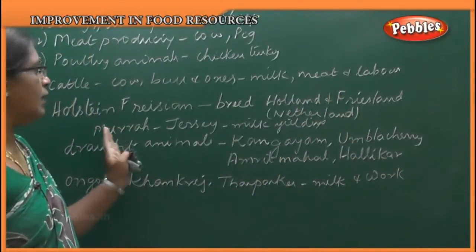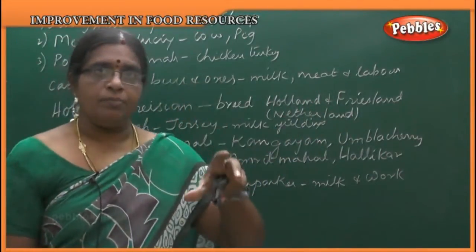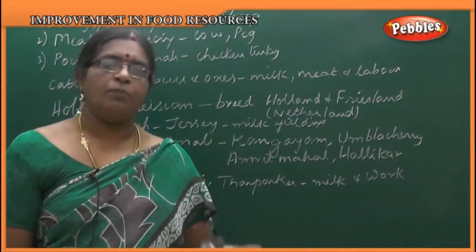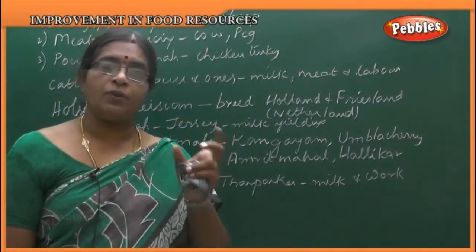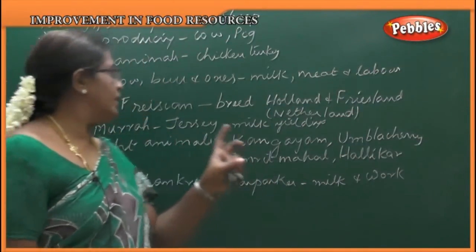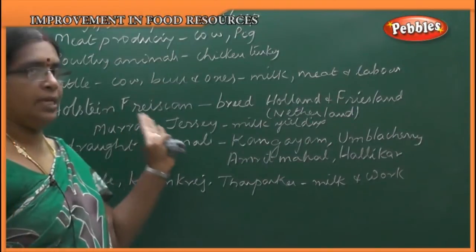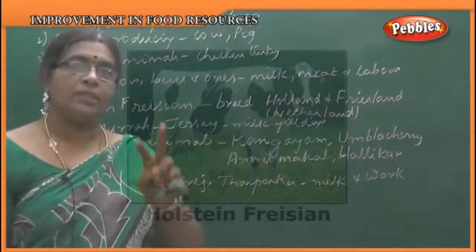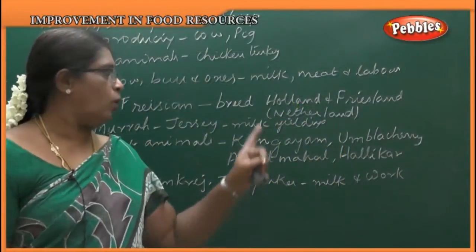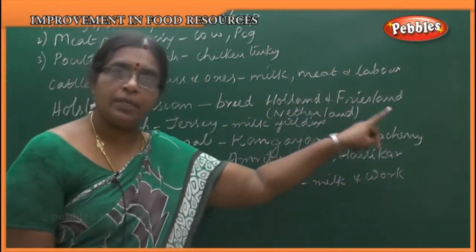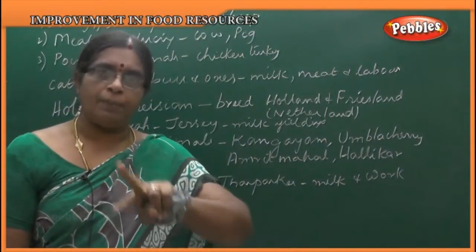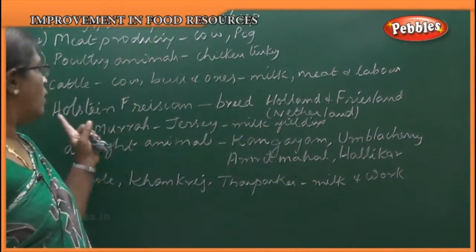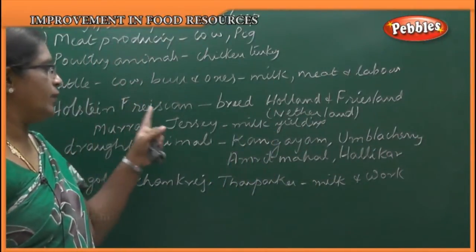Next, how many varieties of cows produce more milk? There is a new species called Holstein Friesian. The new variety of cow is called Holstein Friesian — it is a cross breed. One cow from one land and one Friesian from another land. When the cross breeding took place, they got a new variety called the Holstein Friesian breed.